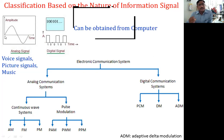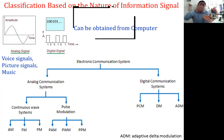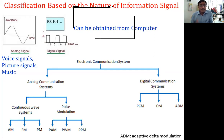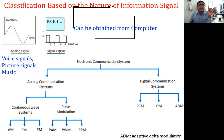The amplitude of an analog signal varies continuously with time, whereas the amplitude of a digital signal varies in a discrete manner — high or low. Examples of analog signals are voice signals, picture signals, and music. Whereas digital data is always generated from a computer; it is a binary sequence of ones and zeros.